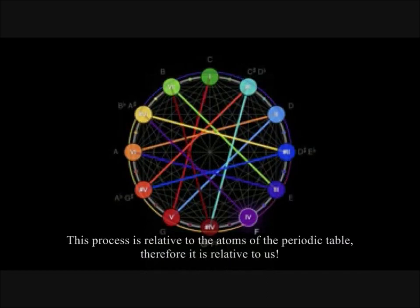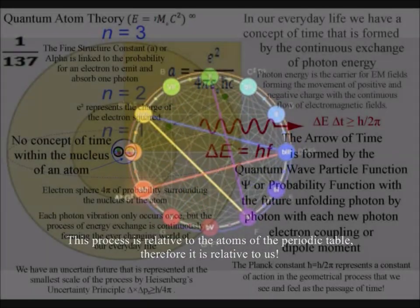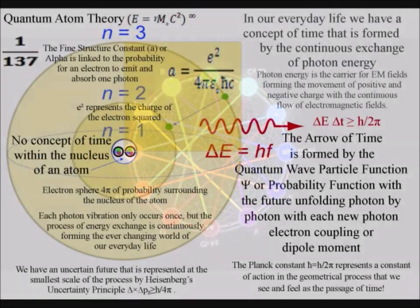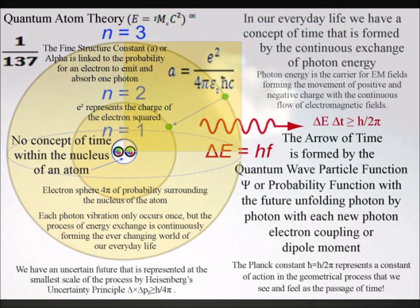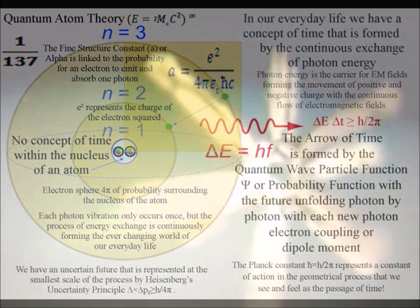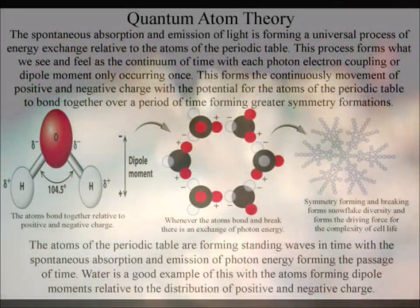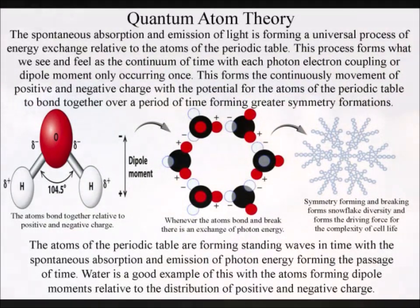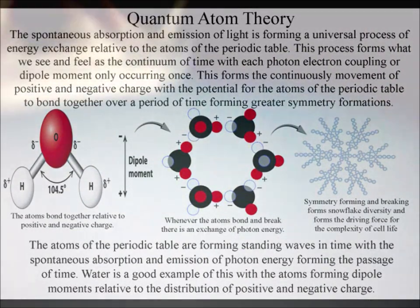Electrons exist as standing waves oscillating at various frequencies. The future is unfolding with each photon-electron coupling, or dipole moment, with particular patterns corresponding to certain frequencies and energy levels, relative to the atoms of the periodic table and environmental temperatures.